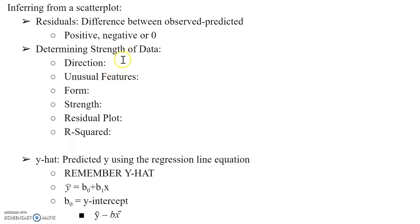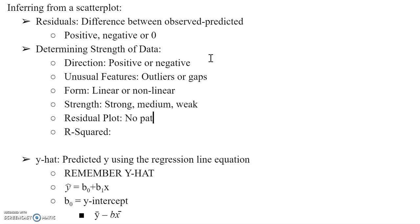How do you determine the strength of data? You need to talk about these six key features. Some situations you won't have the residual plot, so you will have to talk about the other five. Direction: Is it positive, negative? Generally they will have a shape, so positive or negative. Unusual features: As last unit as well, it's outliers or gaps. Form: Is it linear or non-linear? Sometimes you have data that looks parabolic in nature. Strength: This is very subjective to how you look at it. You have strong, medium, weak. Residual plot: you generally want to have no pattern. And your R squared, if it's strong association, it's greater than 80% for strong association.